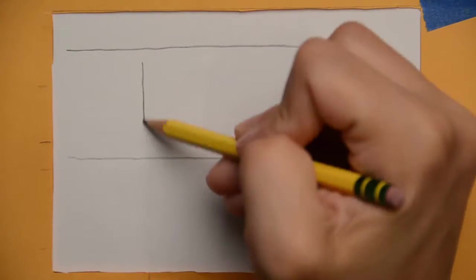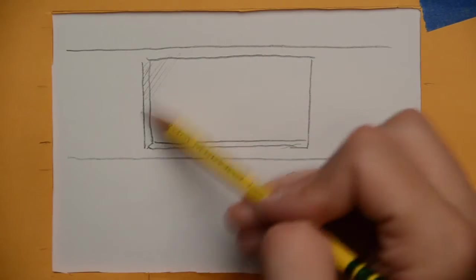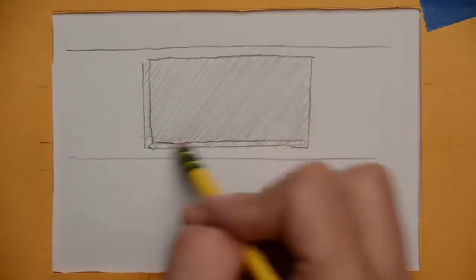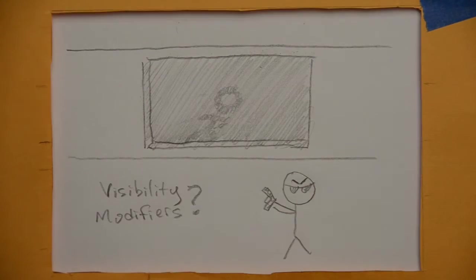If the barrier is a translucent material, like smoked glass, the defender can still defend, but the attacker may receive visibility modifiers like those for smoke or fog. This situation is left to GM discretion.